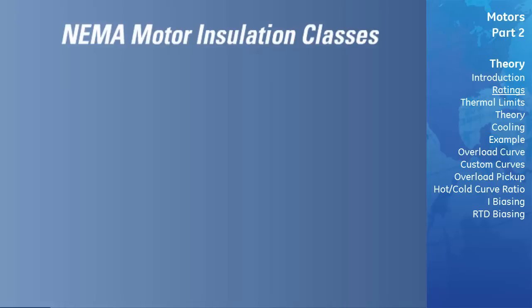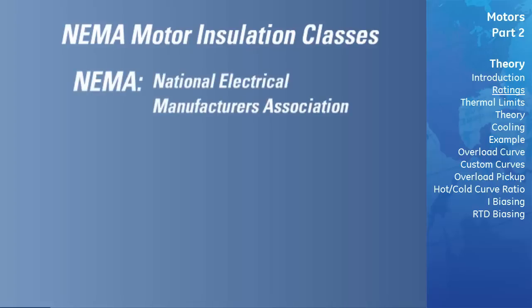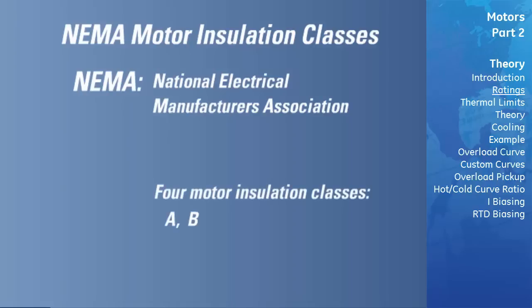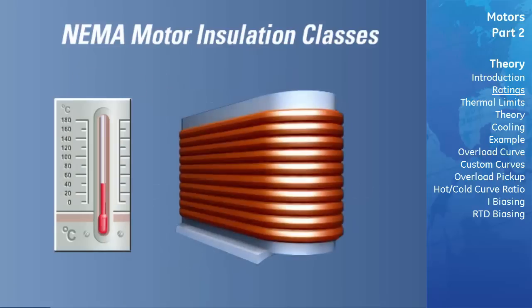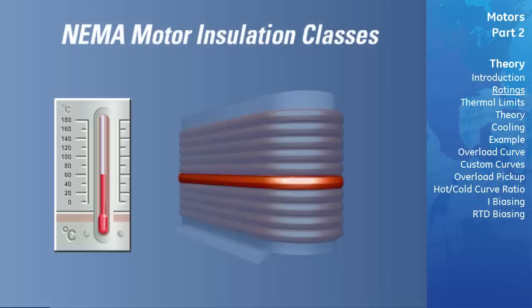NEMA, the National Electrical Manufacturers Association, has established four motor insulation classes: A, B, F, and H. The specification has standardized on an ambient temperature of 40 degrees Celsius, or 104 degrees Fahrenheit, for all classes. Each class of insulation has a different maximum motor winding temperature rise, in addition to a hot spot temperature, which is an additional temperature rise for the windings that are surrounded by other windings.